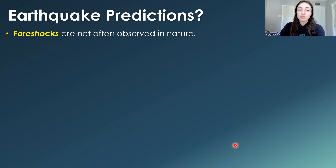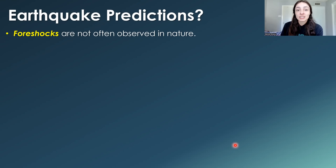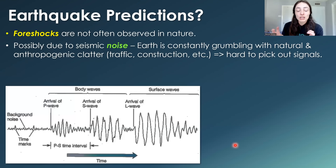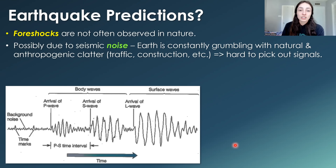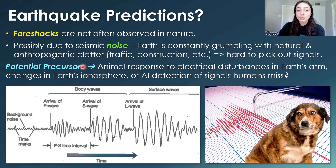Foreshocks or pre-earthquake seismic signals are not often observed in nature — though they have been observed in some lab-produced earthquake simulations. In nature there's a lot of seismic noise because Earth is constantly grumbling and rumbling, and there's also anthropogenic seismic clatter like traffic and construction. So it's hard to pick out clear signals that are actually foreshocks. We try to look to other potential precursors beyond seismic data — for example, animal behavior, as animals often respond to electrical disturbances in Earth's atmosphere that may precede earthquakes.